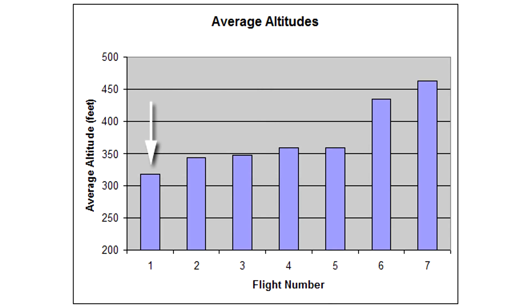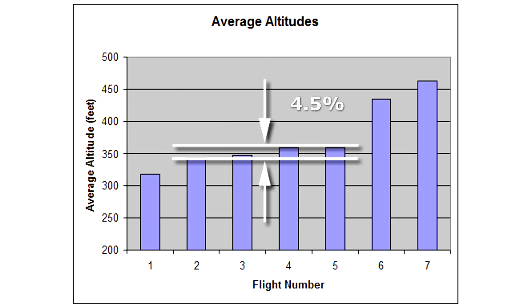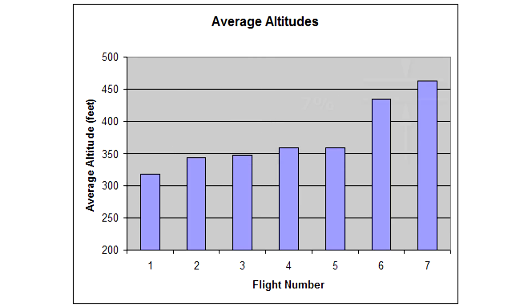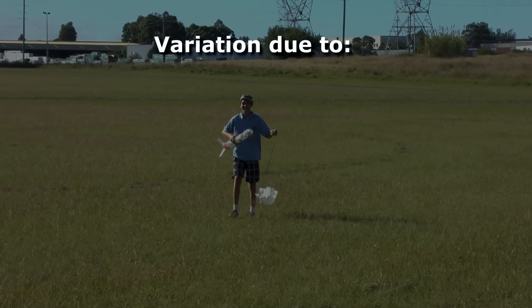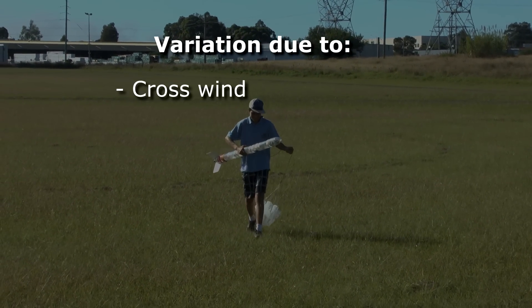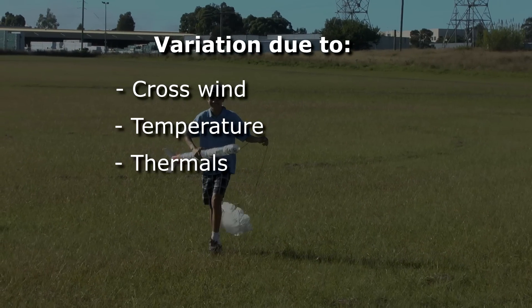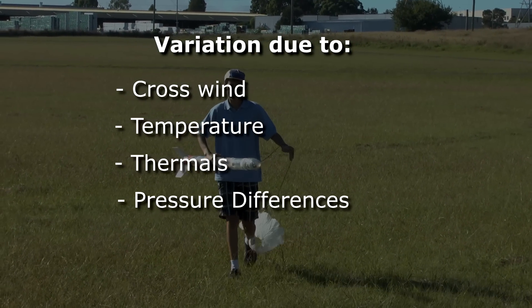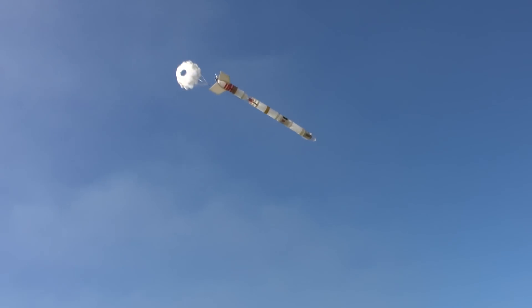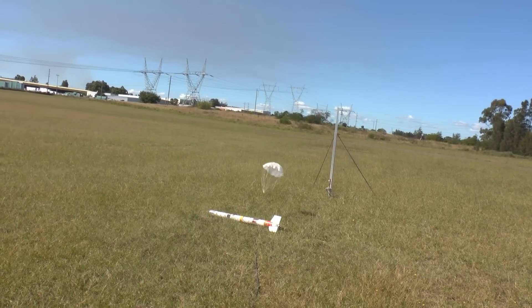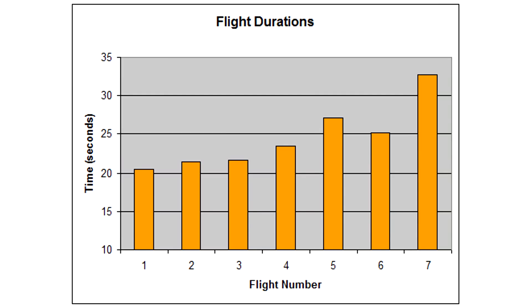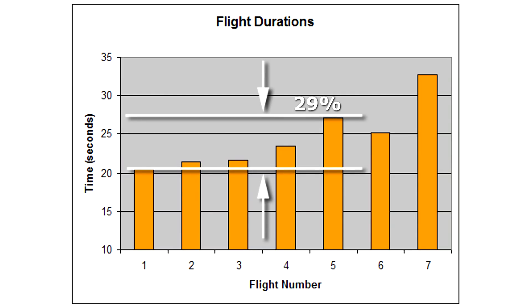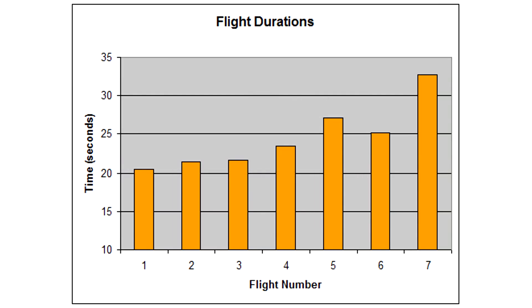The first flight was out considerably, so looking at flights 2 to 5 the difference was only about 4.5% between them. For flights 6 and 7 with foam the difference was about 7%. The variation here is due to a number of factors such as crosswind, temperature, thermals, and some pressure differences as well. We also compared the flight durations of these flights, as sometimes people use flight duration to compare performance. From the results you can see that the variability is as much as 29%, which is a significant error.